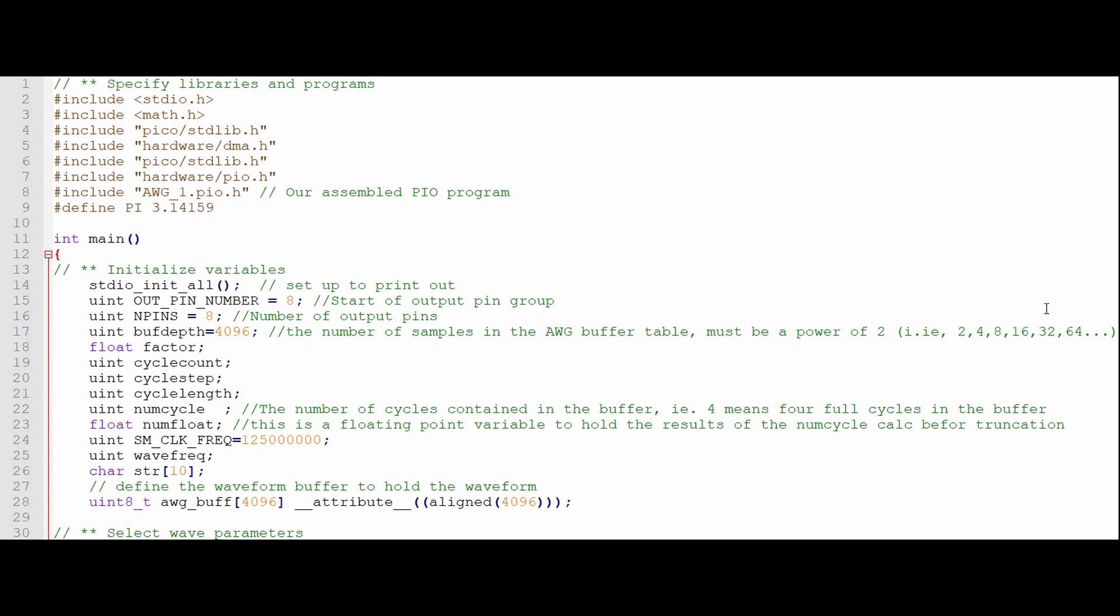Let's touch on the revised program a bit. It's nearly identical to the fast AWG program in episode 15, except I've increased the wavetable buffer size to 4096 bytes.